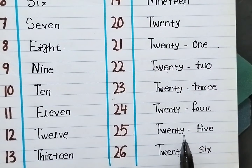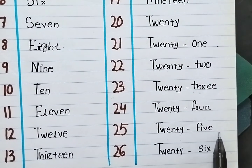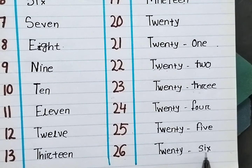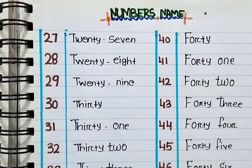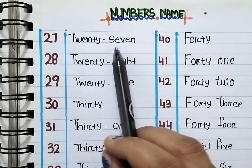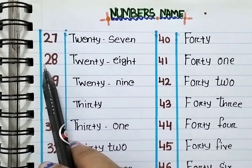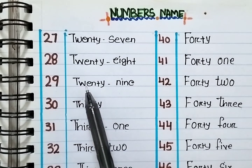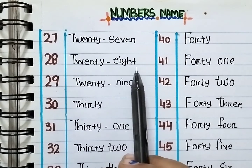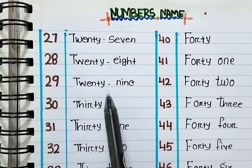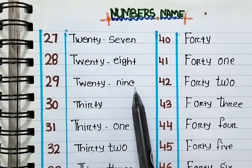25. T-W-E-N-T-Y F-I-V-E 25. 26. T-W-E-N-T-Y S-I-X 26. 27. T-W-E-N-T-Y S-E-V-E-N 27. 28. T-W-E-N-T-Y E-I-G-H-T 28. 29. T-W-E-N-T-Y N-I-N-E 29.